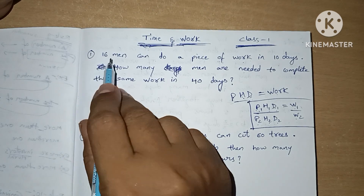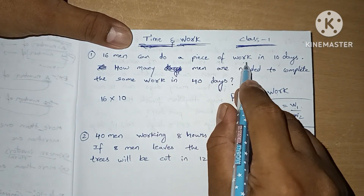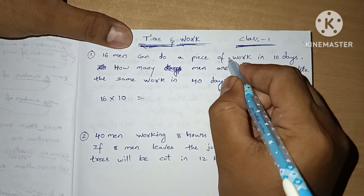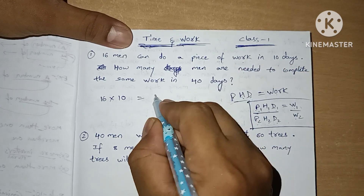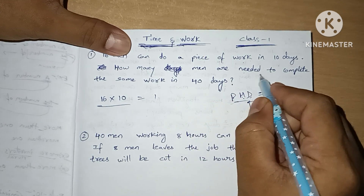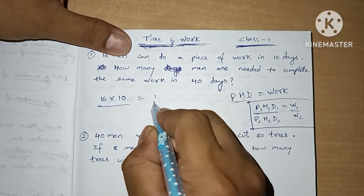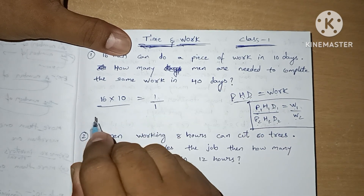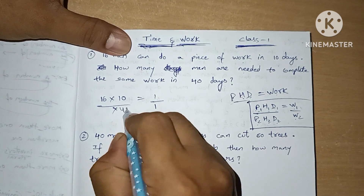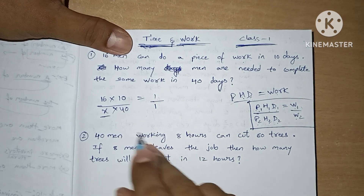Let's start with question number 1. 16 men can do a piece of work in 10 days — that's 1 piece of work. How many men are needed to complete the same work in 40 days? Same work, so W equals 1. In 40 days, how many men are needed? This is the question.